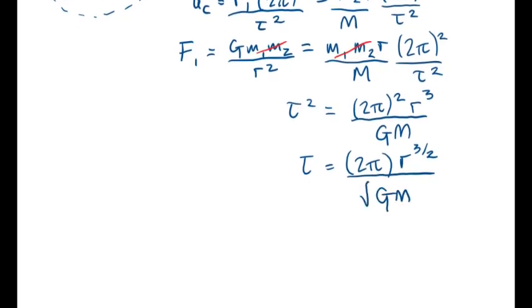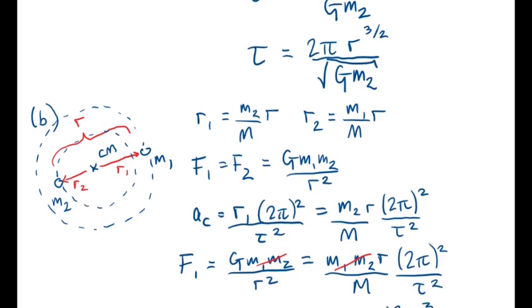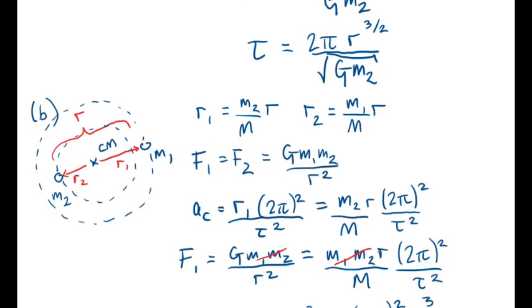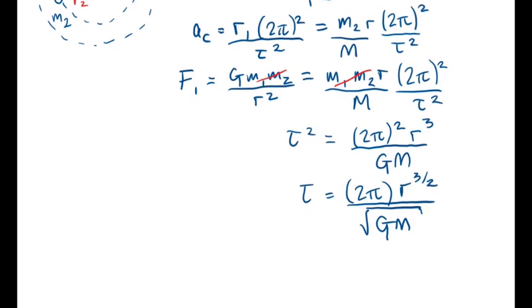So tau is equal to 2 pi times r to the 3 halves over the square root of the gravitational constant times the total mass. Now in part A, recall that the expression for tau is exactly the same except with m2 instead of the total mass. So in the limit that m2 approaches infinity, we approach m2 equals the total mass because m2 is way bigger than m1. In this case it would be the same expression as in part A.